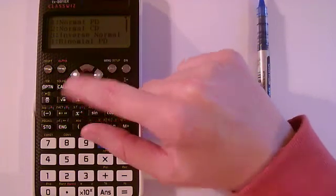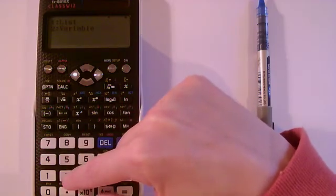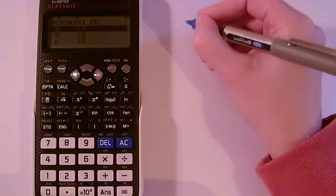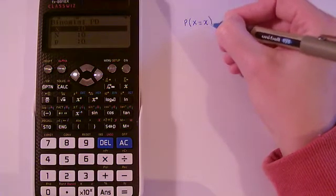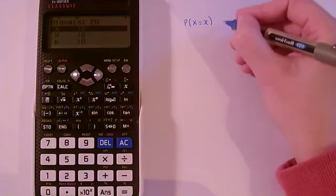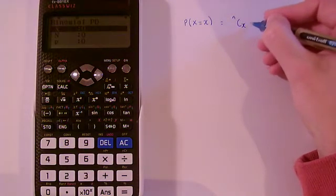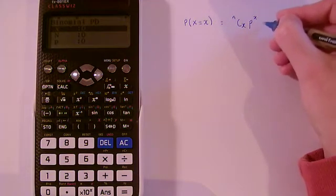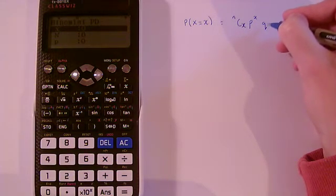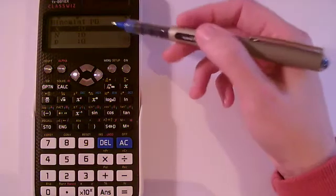This option here, number four, which I'll choose first — we're going to choose the variable option. It works out probabilities of the binomial distribution being equal to a particular value of x, using the formula: nCx times the probability of success to the power of x, times the probability of failure, which is 1 minus p, or q to the power of n minus x.